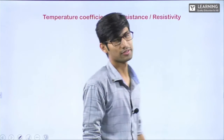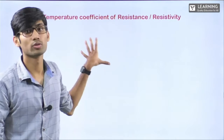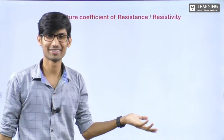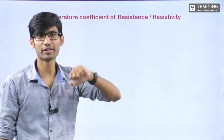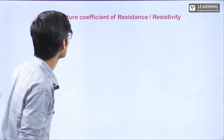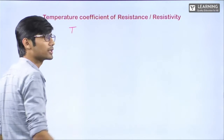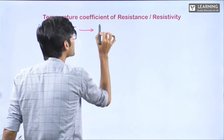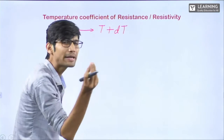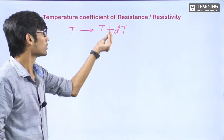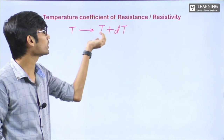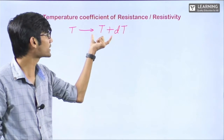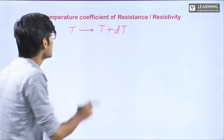Next — temperature coefficient of resistance or resistivity. This is very important and is something based on which you will get numericals in exams. Theoretically we understood, but physics is all about numericals. By how much increase in temperature, how much will resistivity increase? We should learn to calculate that. Suppose initially a conductor is at temperature T. If we increase the temperature from T to T + dT — a small change in temperature — temperature is changed from T to T + dT.